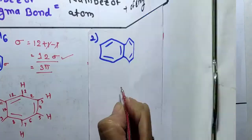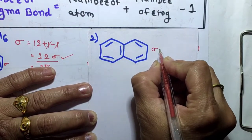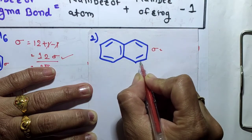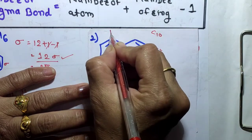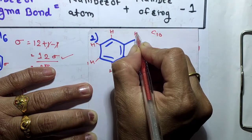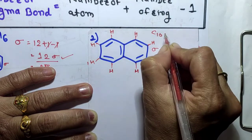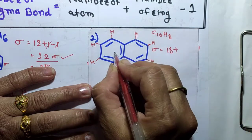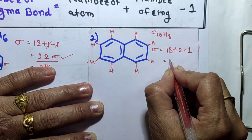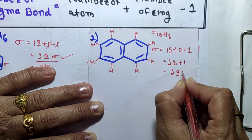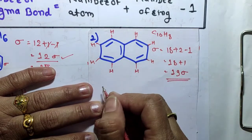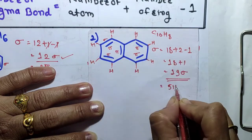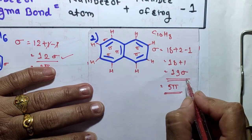Next compound: naphthalene. Calculate the sigma bonds first. Total number of atoms: carbon C10, hydrogen H8, so C10H8. That is 10 + 8 = 18 atoms, plus number of rings is 2, minus 1, giving 18 + 1 = 19 sigma bonds. For pi bonds, in each double bond one is sigma and the remaining is pi — naphthalene contains 5 pi bonds.